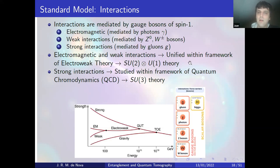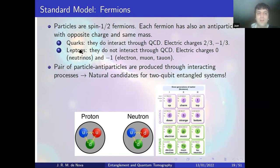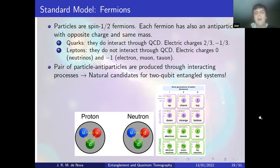The fermions are spin-1/2 particles, each with a corresponding antiparticle of opposite charge and same mass. Quarks interact through QCD while leptons do not. Among leptons we distinguish neutrinos from charged leptons such as the electron, muon, and tau. Since these particles are often produced in particle-antiparticle pairs through interaction processes, such pairs are natural candidates for a two-qubit entangled system to study quantum information problems. We will focus on the top quark.